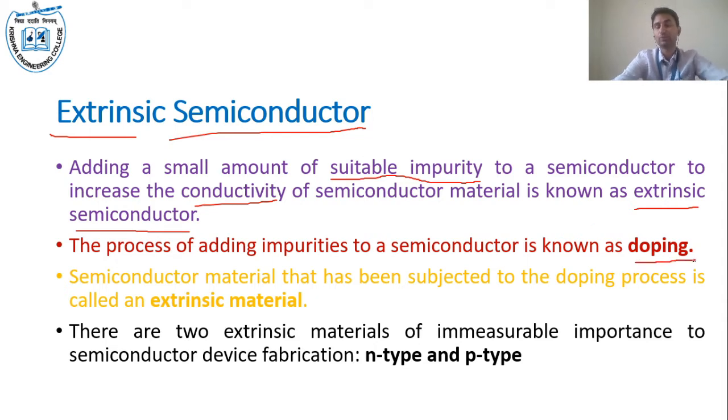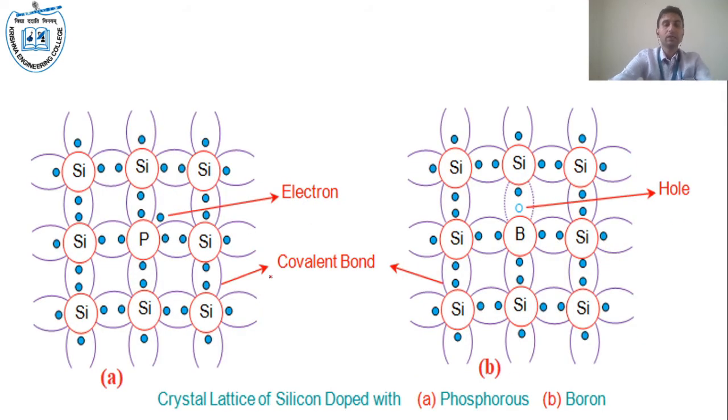The process of adding impurity to the semiconductor is known as doping. The semiconductor material that has been subjected to the doping process is called extrinsic semiconductor. Without doping, it is intrinsic semiconductor. Extrinsic semiconductor is divided into n-type and p-type.